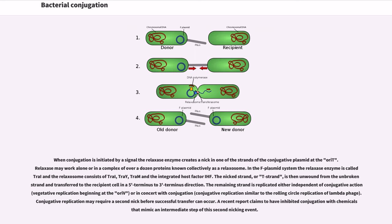When conjugation is initiated by a signal, the relaxase enzyme creates a nick in one of the strands of the conjugative plasmid at the oriT. Relaxase may work alone or in a complex of over a dozen proteins known collectively as a relaxosome. In the F plasmid system, the relaxase enzyme is called tra I and the relaxosome consists of tra I, tra Y, tra M and the integrated host factor IHF.